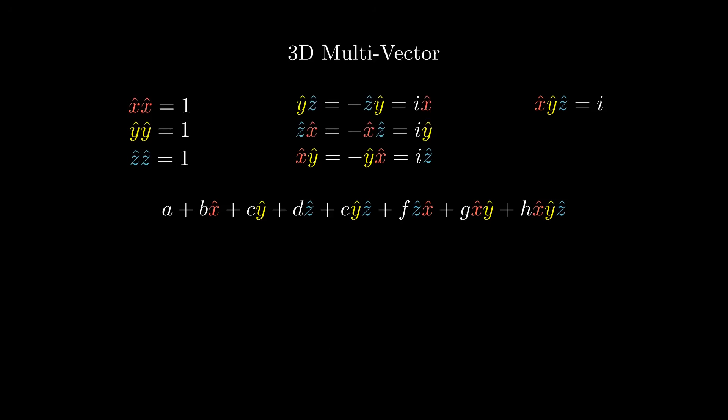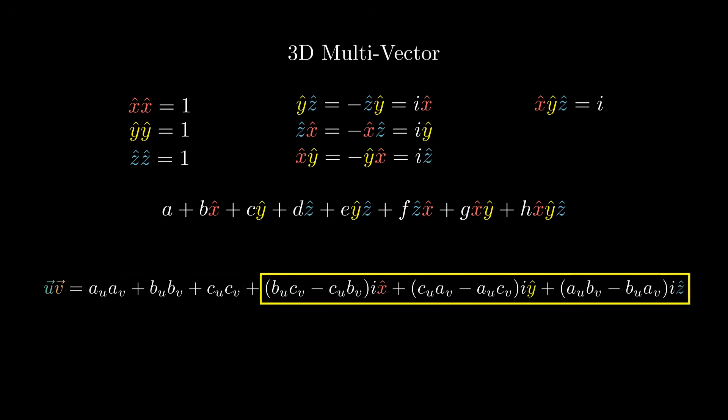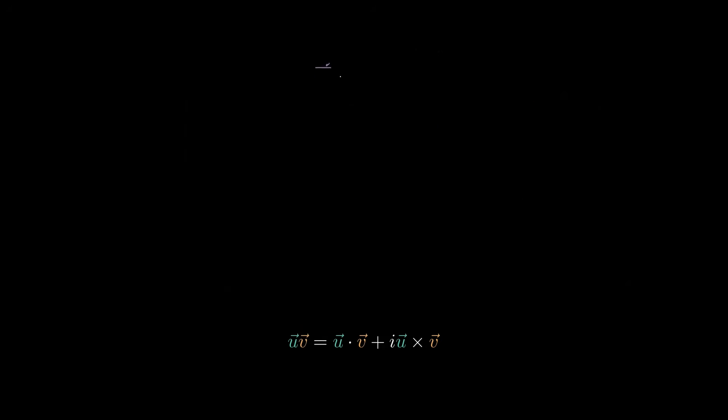Lastly, we will find with the geometric product of two vectors in the next section, which results in a scalar plus a bivector, which can be conveniently written as the dot product between the two vectors plus i times the cross product. And this will become useful because the equations of electromagnetism are often expressed in terms of these operations.